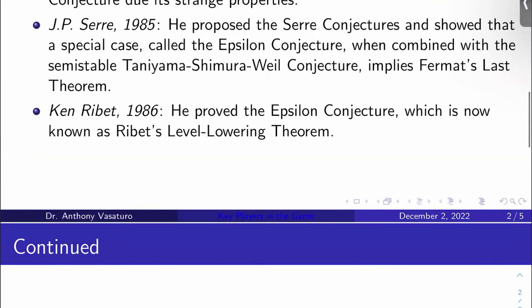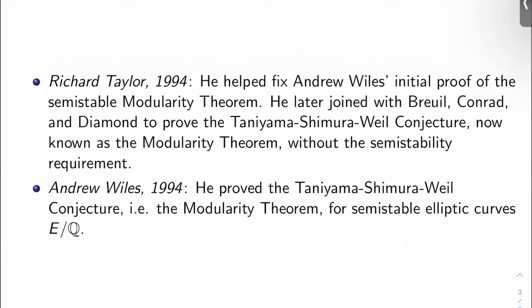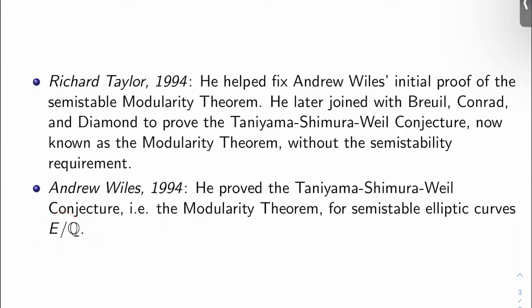Fast forward almost 10 years later, Richard Taylor and Andrew Wiles actually prove Taniyama-Shimura-Weil for semi-stable elliptic curves. What actually happens is in 1993, Wiles announces a proof by himself — shocks the world — saying he proves Taniyama-Shimura-Weil for all semi-stable elliptic curves E over Q. People find a mistake in the proof, and then Wiles joins with his PhD student Richard Taylor in 1994 to help fix the initial proof of semi-stable Taniyama-Shimura-Weil, or the modularity theorem.